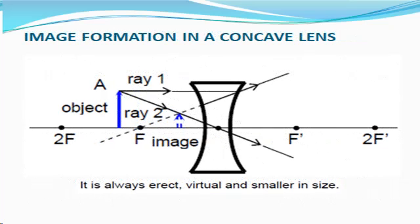Let us have the image formation in a concave lens. What kind of image is formed by a concave lens? The ray method shown in this figure shows the image formed by a concave lens. It is always erect, virtual, and smaller in size.